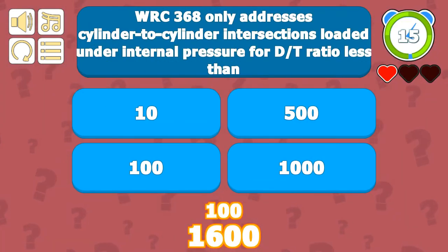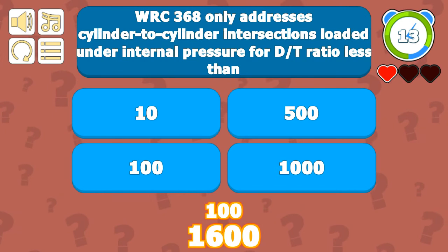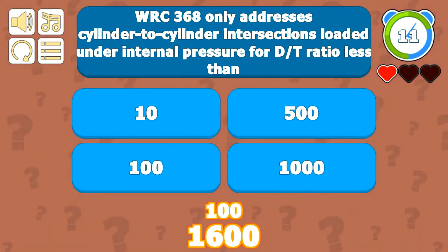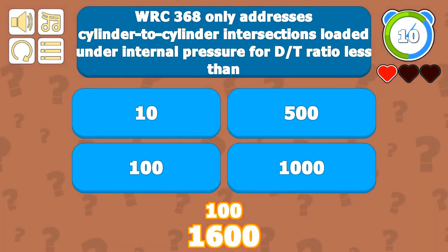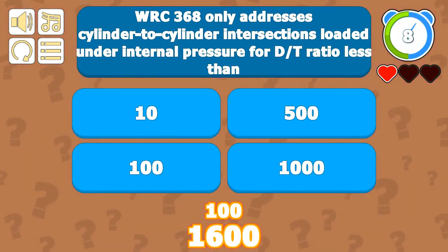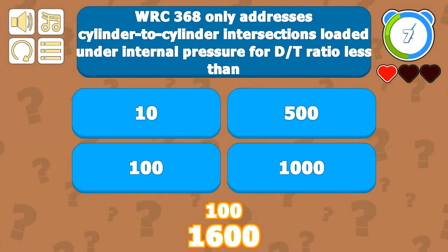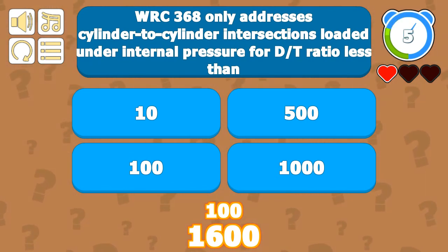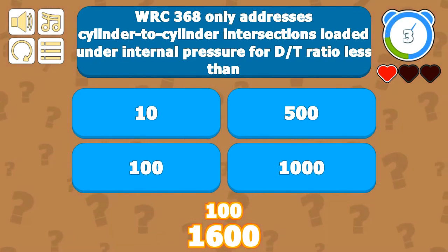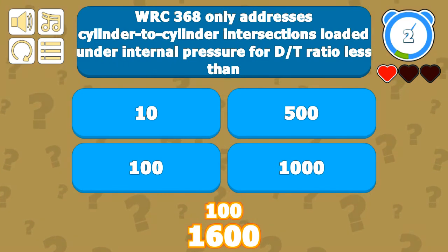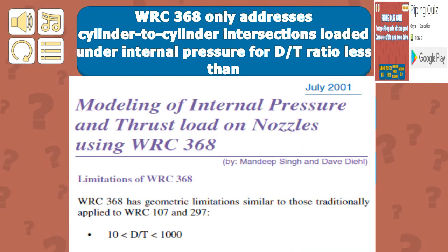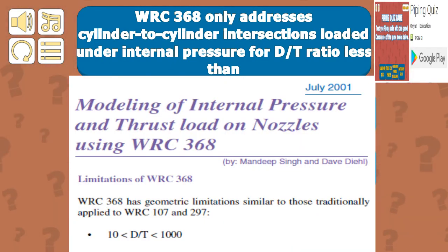WRC 368 addresses cylinder-to-cylinder intersections loaded under internal pressure for D/2t ratio less than 1000. The limitations for WRC 368 are the same as for WRC 107, and hence 1000 is the applicable value.